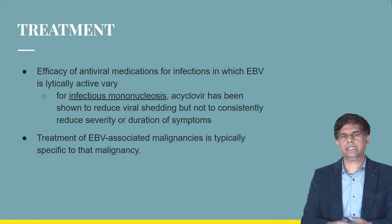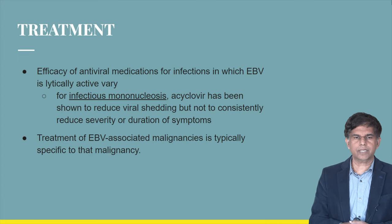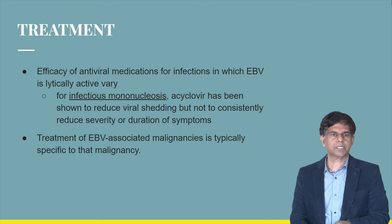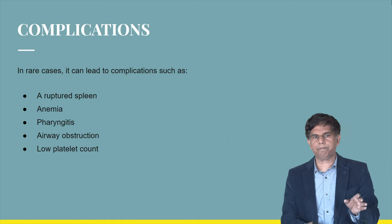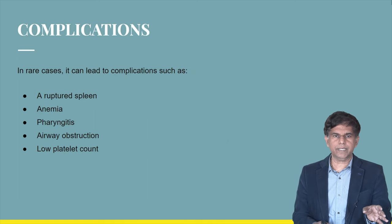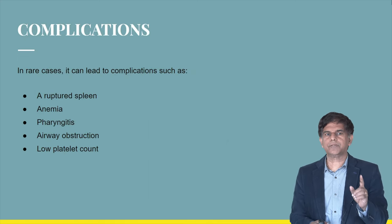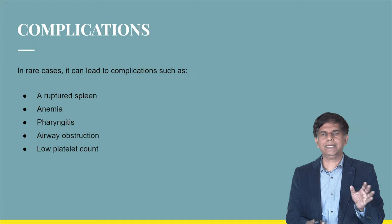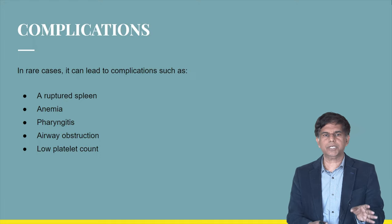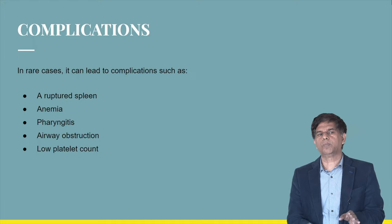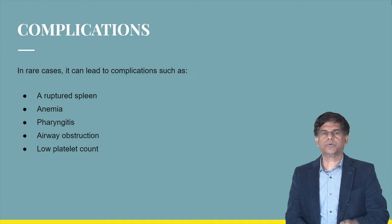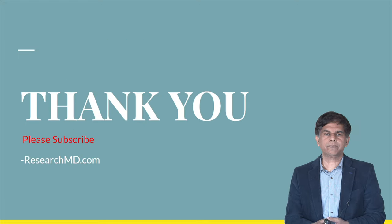Treatment of EBV-associated malignancy is typically specific to that type of malignancy, such as Burkitt lymphoma. In rare cases, EBV infection can lead to complications including ruptured spleen, anemia, pharyngitis, airway obstruction, and low platelet count. Thank you so much for watching — we'll be back with another presentation soon.